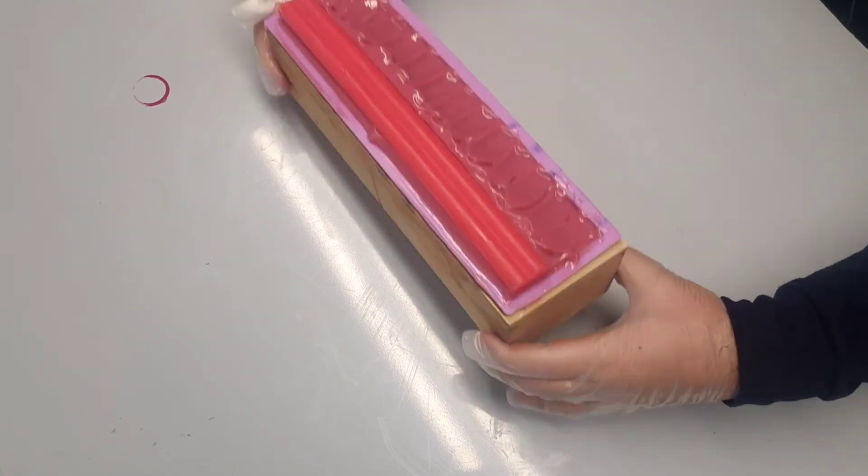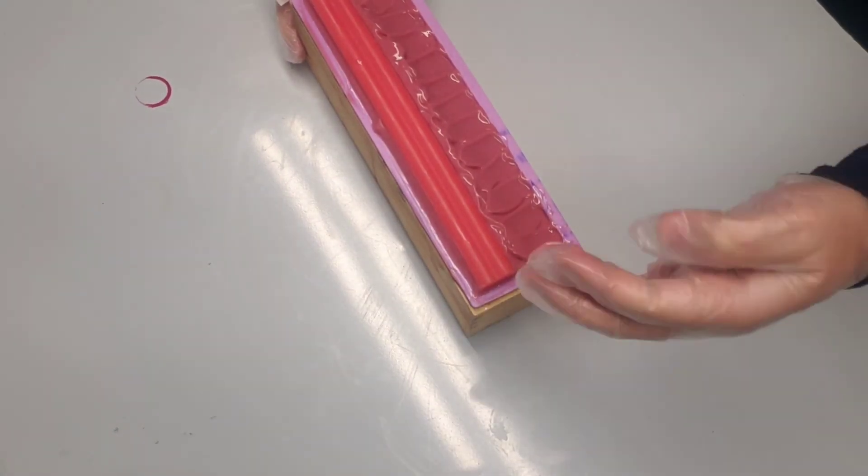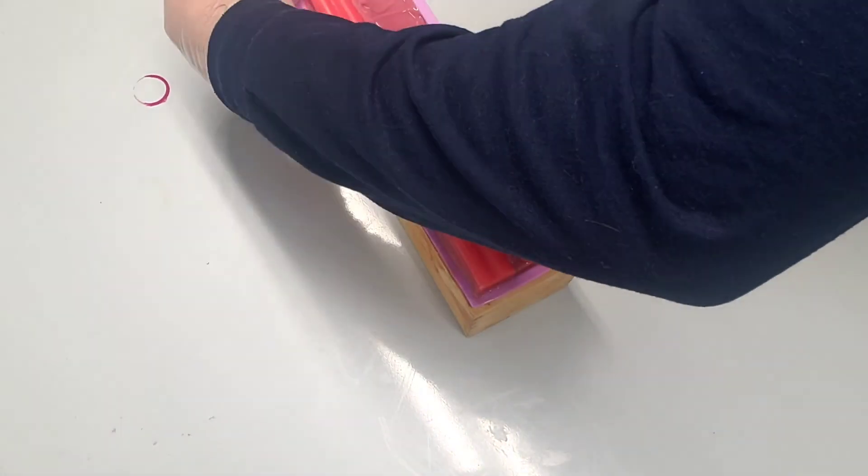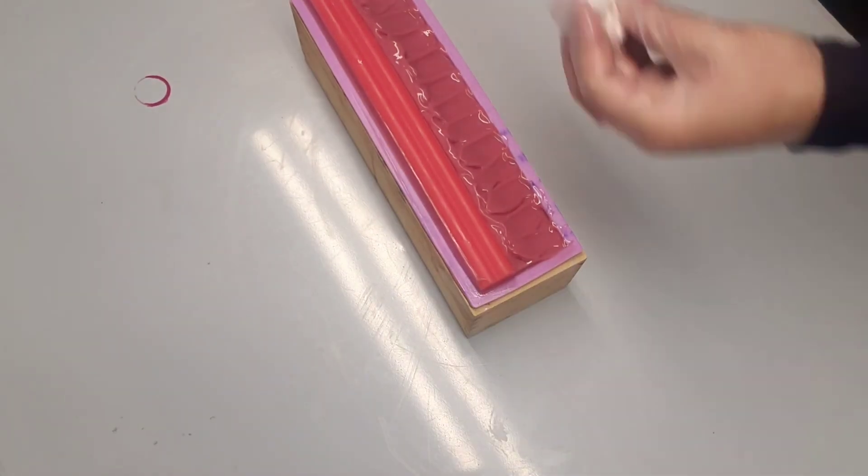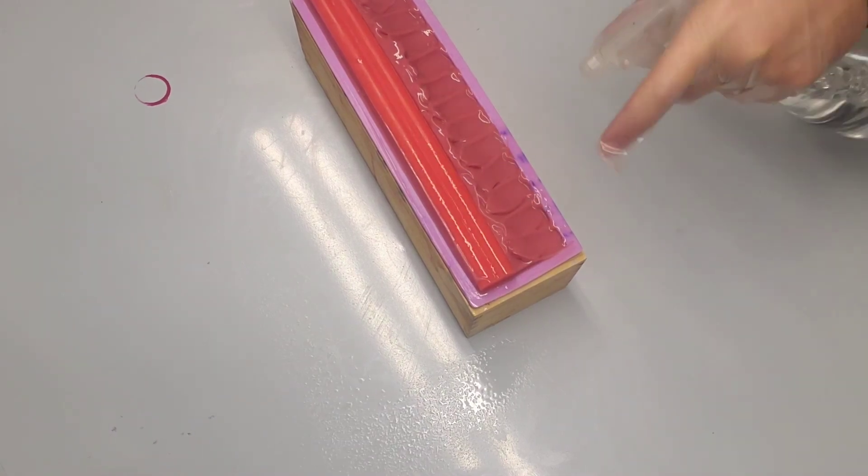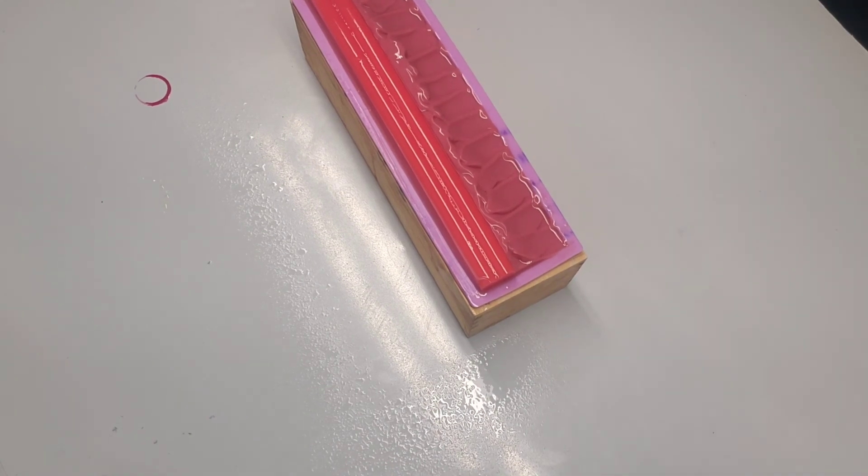When we cut the soap you'll see the heart showing on top and part of it inside, and another heart inside the silver layer we did earlier. This is the design I was going for. Hopefully it will look nice. I'll see you again tomorrow when I cut the soap. For now I'll just spritz it with some alcohol and put it on the side. See you tomorrow.